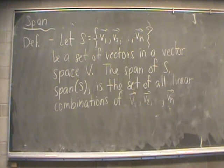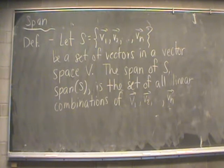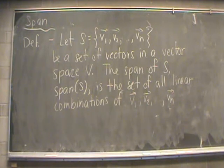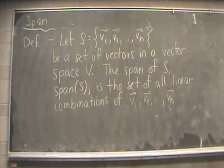Let S be a collection of n vectors inside vector space V — that is, {v1, v2, ..., vn}. The span of this collection S, usually denoted span(S), is defined to be the set of all linear combinations that we can create from the vectors v1 up to vn.